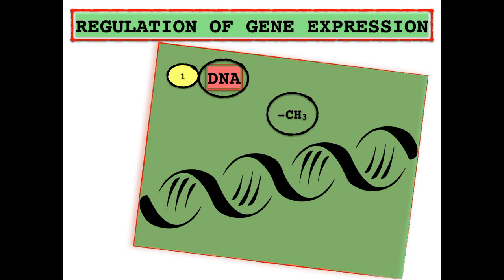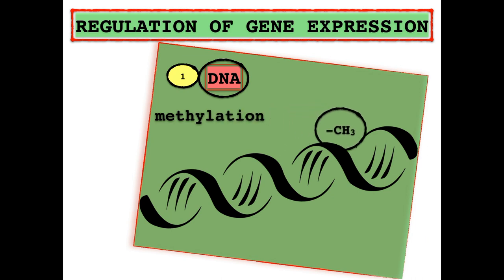On a DNA level, gene expression can be regulated by the process of methylation, which is the addition of a methyl group to a particular nucleotide within the DNA sequence, that generally results in blocked or hindered gene expression. Basically, if a particular gene within the DNA gets methylated, there would be no RNA or proteins produced as a functional product.